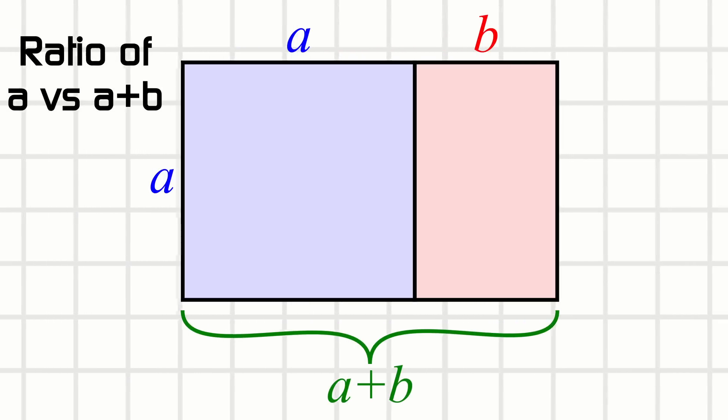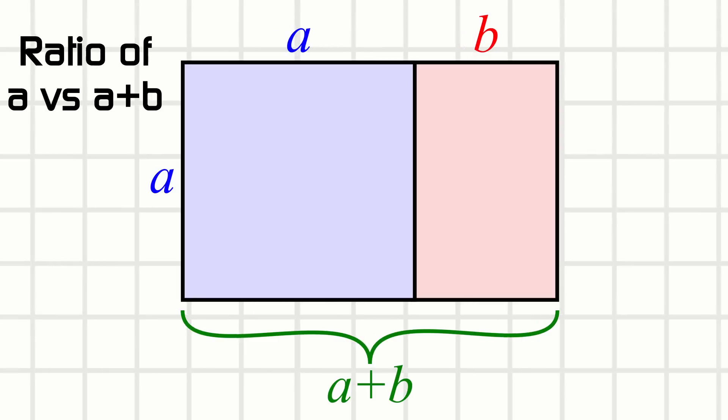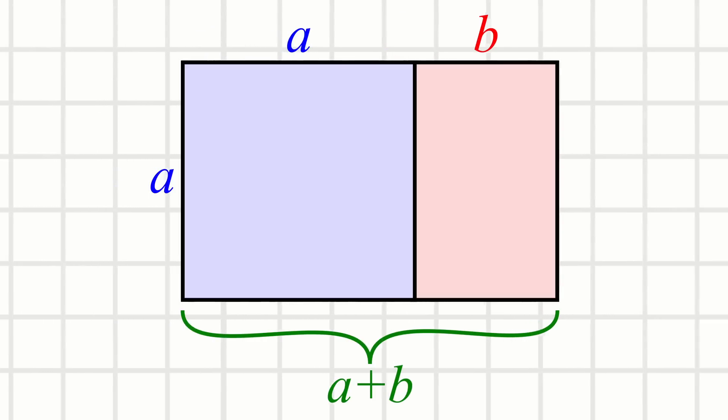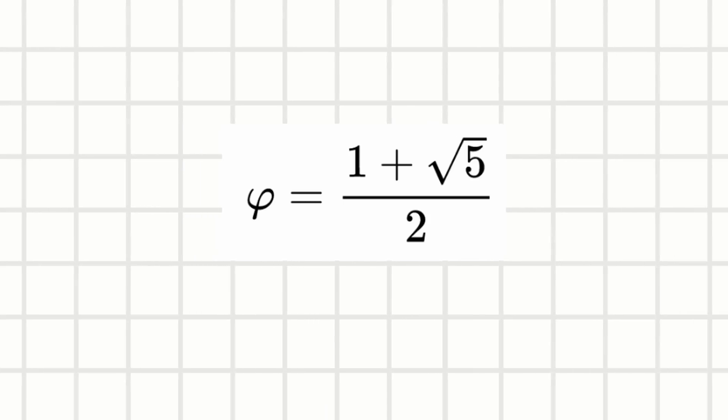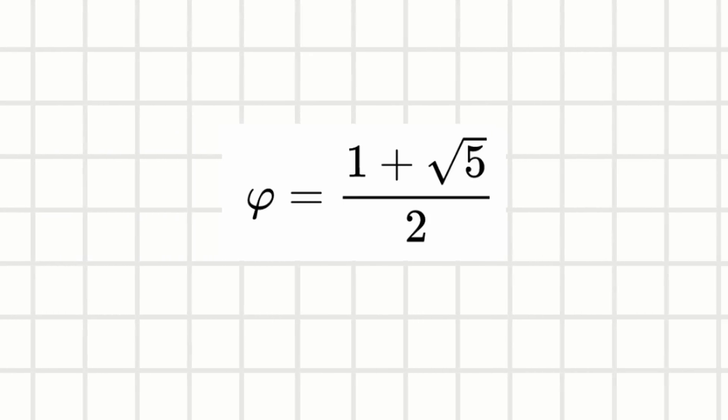This rectangle is special because you could cut out a square and the remaining length, compared to the previous rectangle's width, now has the same ratio as before — just rotated 90 degrees. The perfect golden ratio is this funny number, often denoted by the Greek letter phi. So why do we say we see the golden ratio a lot in nature, like the coil of a nautilus?